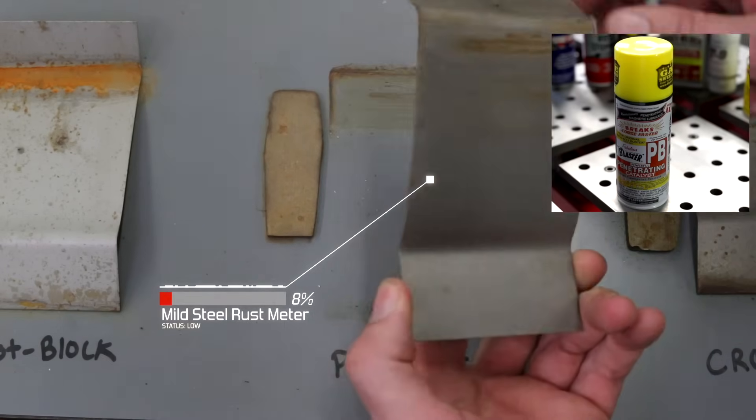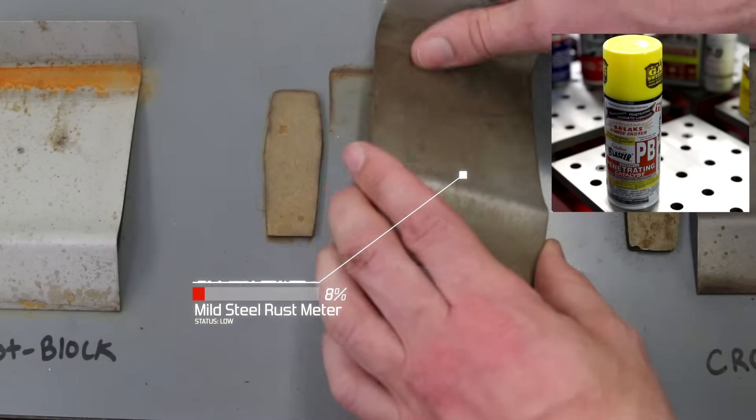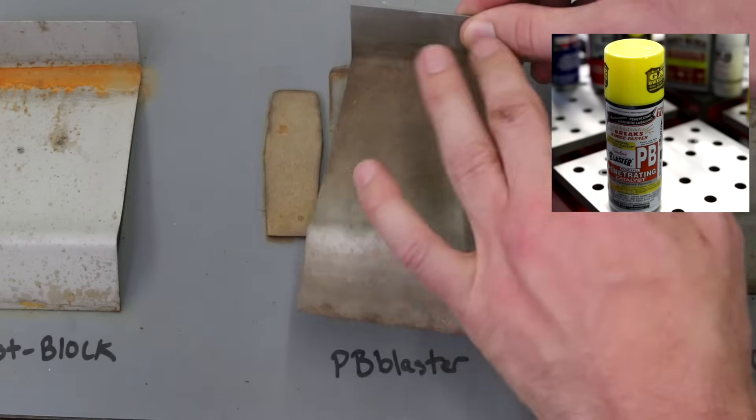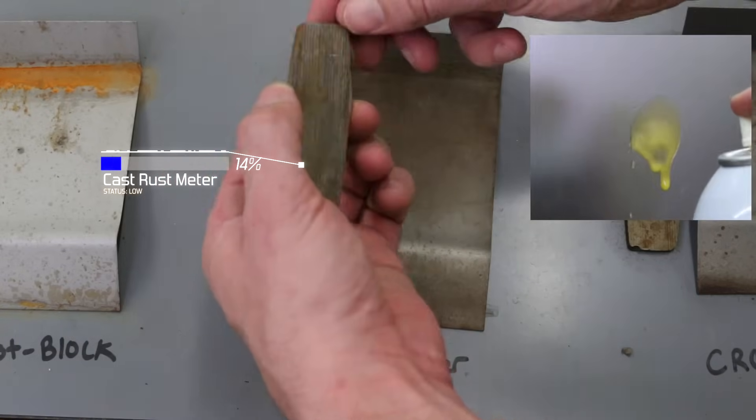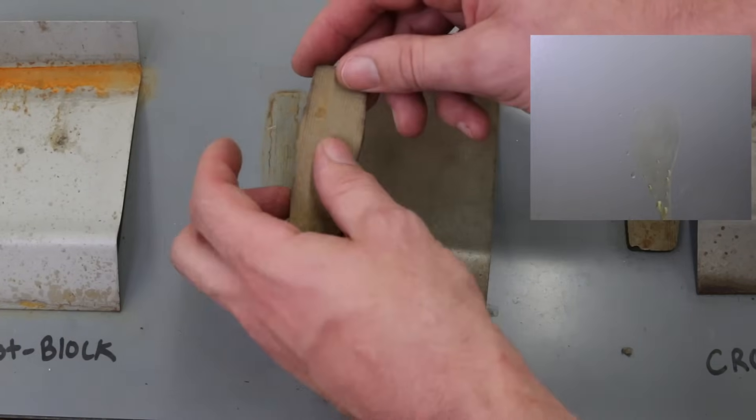The PB Blaster did pretty good in the rust department. Still left some discoloring and some tarnish behind, which is kind of hard to remove. The cast iron had some surface rust on it. But overall, not too bad if this is all you got.